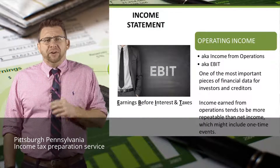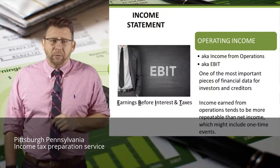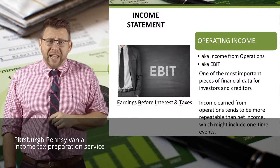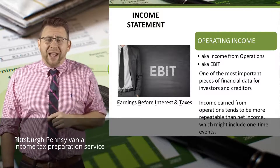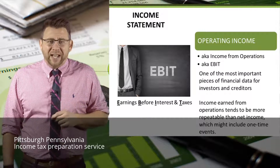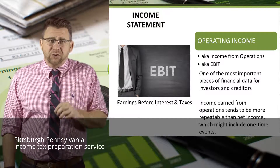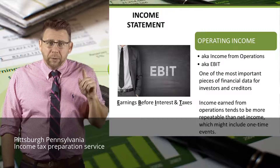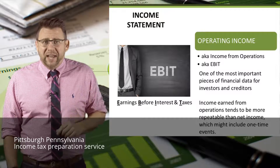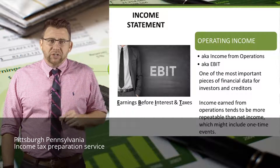Operating income has a few different names — it is also known as income from operations or EBIT, which stands for earnings before interest and taxes. When we look back at the multi-step income statement, about the only things that remain after operating income are interest and taxes. Operating income is one of the most important pieces of financial data for investors and creditors because it tends to be more repeatable than net income, which may include some one-time events. Therefore, it has a higher predictive value, which is important to investors.